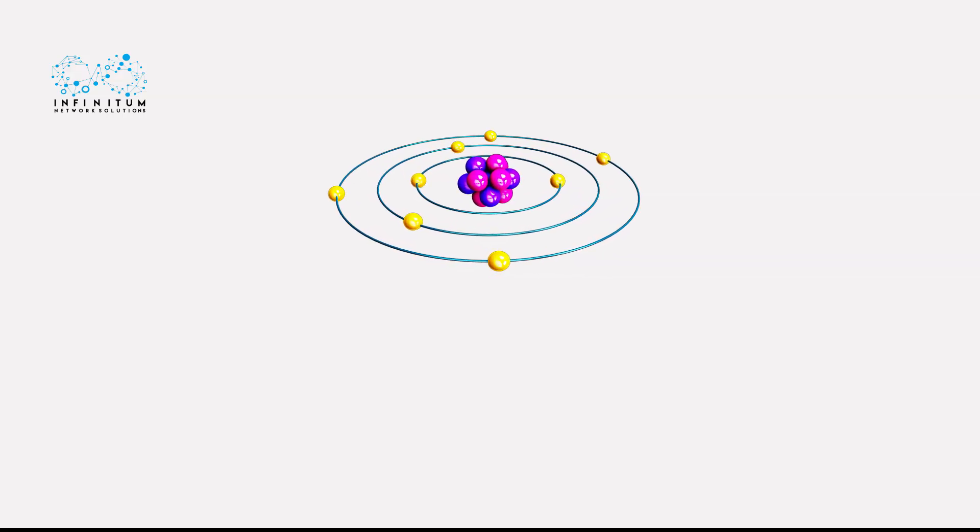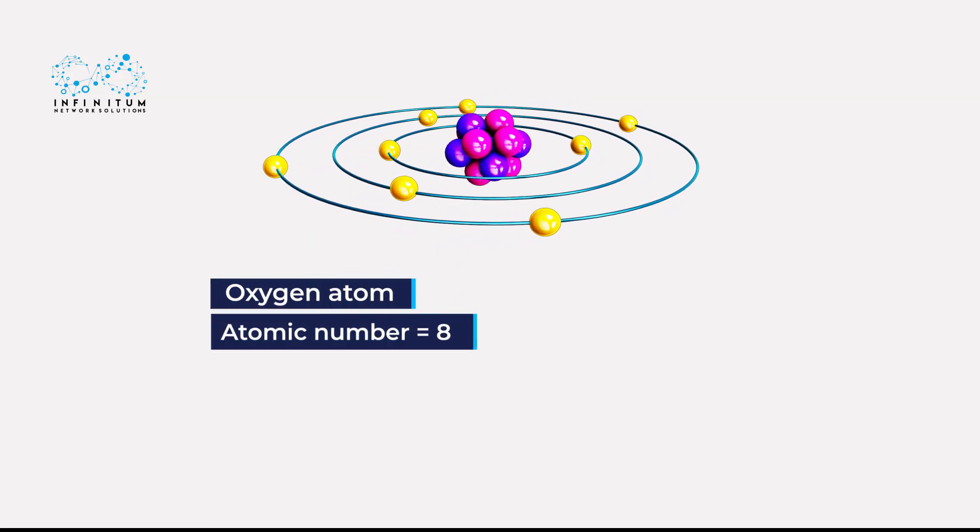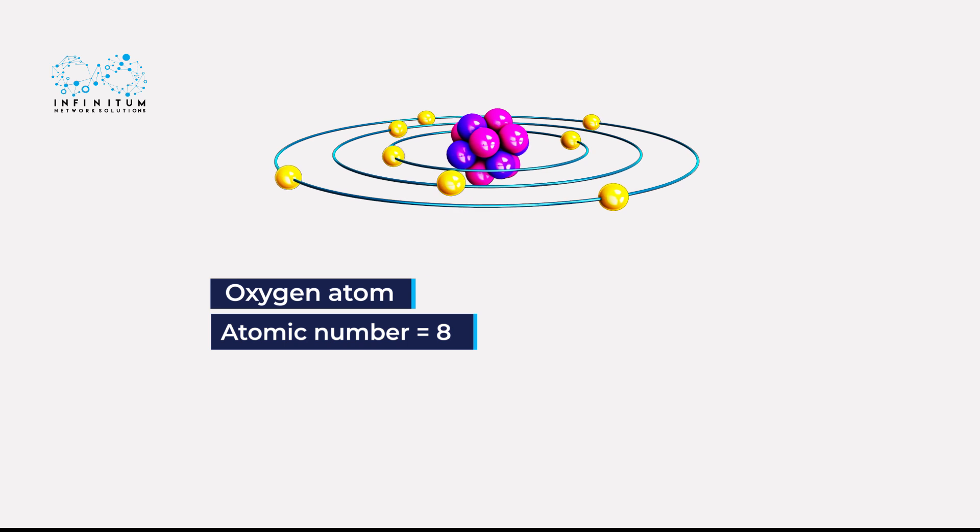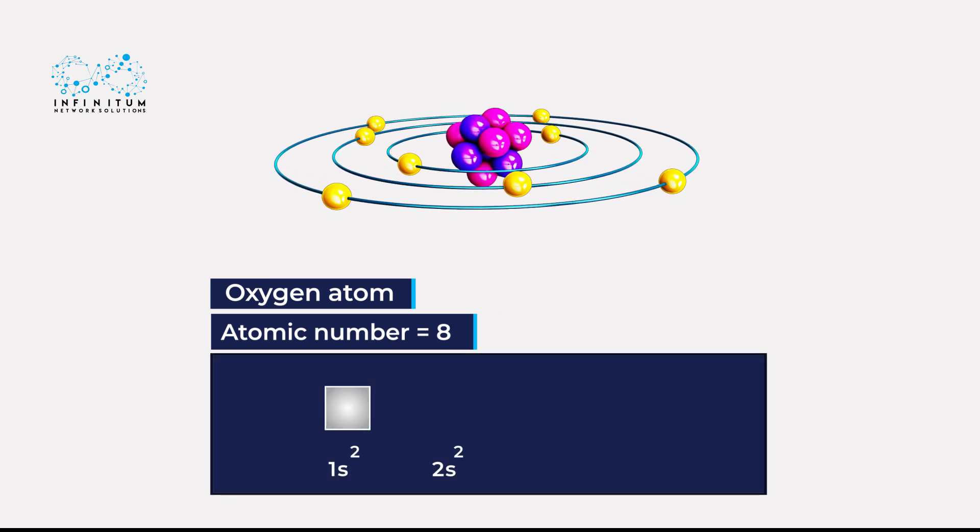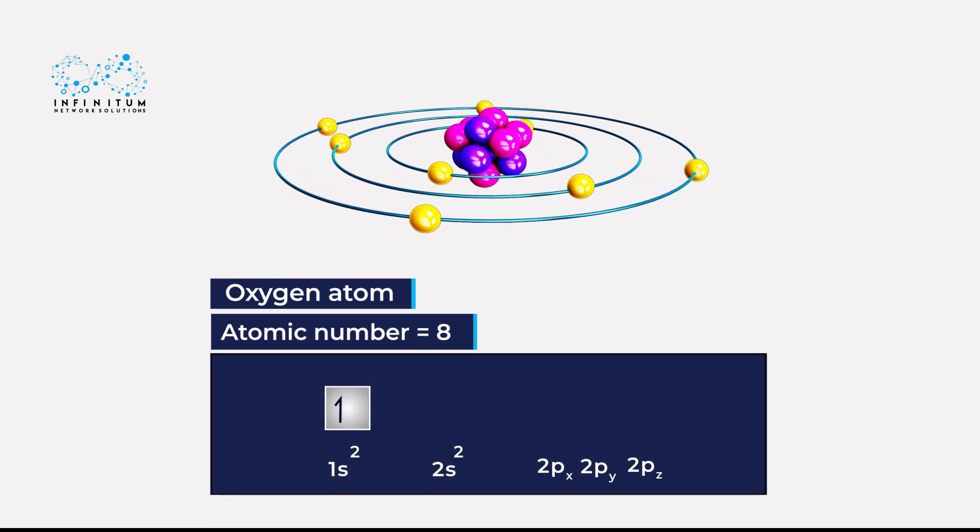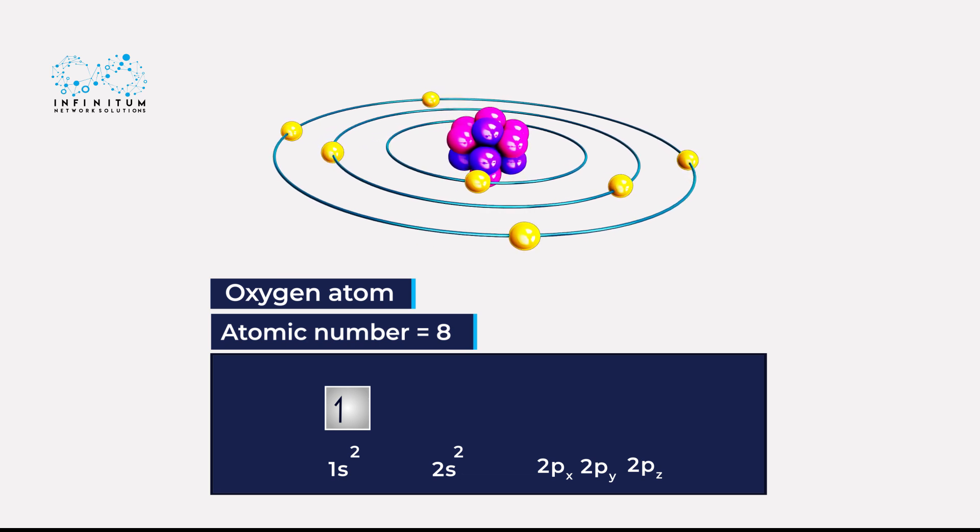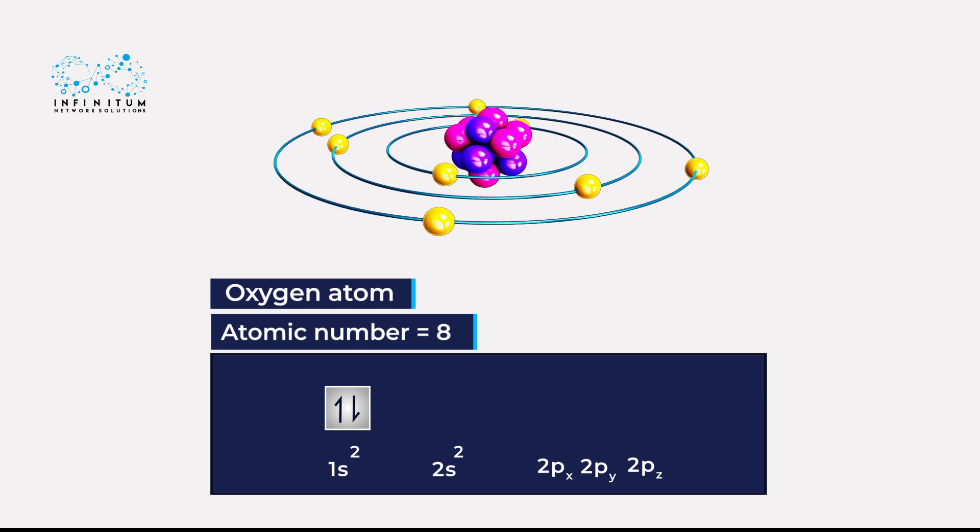Consider the element oxygen, with Z equals 8. It has 8 electrons. The first electron goes into the 1s orbital of the K shell. The second electron will be paired up with the first electron in the same 1s orbital.